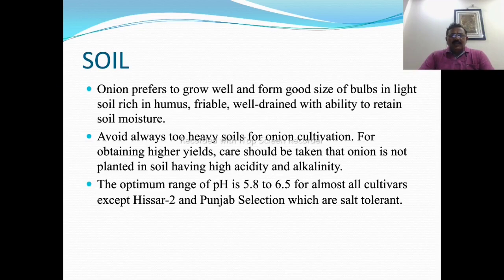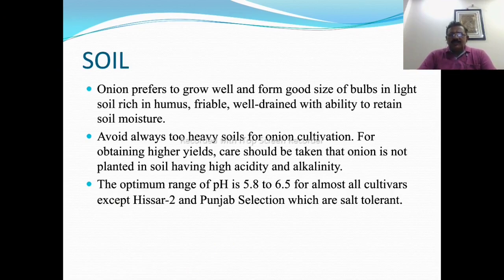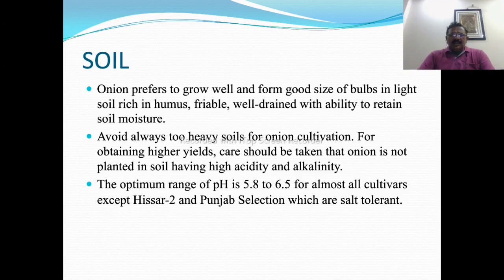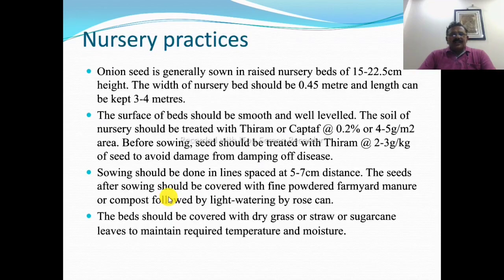For soil requirements, onion grows well and forms good size bulbs in light soil rich in humus, well drained with ability to retain soil moisture. Heavy soils should be avoided for onion cultivation. For obtaining higher yields, onion should not be planted in soil with high acidity or alkalinity. The optimum pH range is 5.8 to 6.5 for almost all cultivars, except Hissar-2 and Punjab Selection which are salt tolerant.